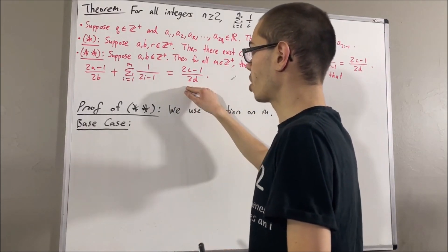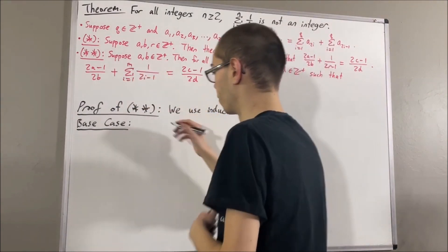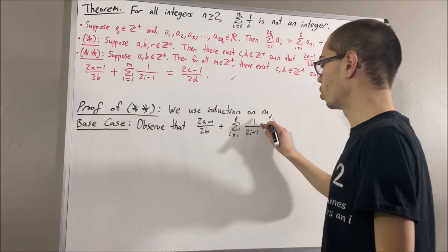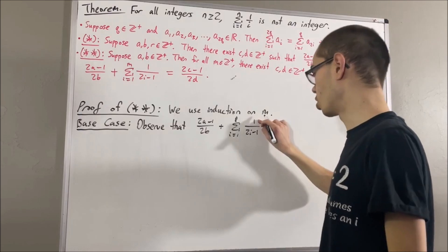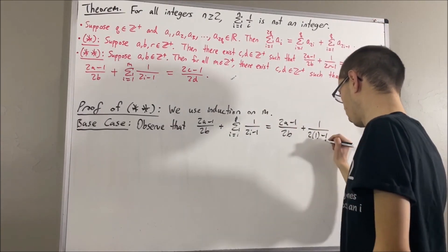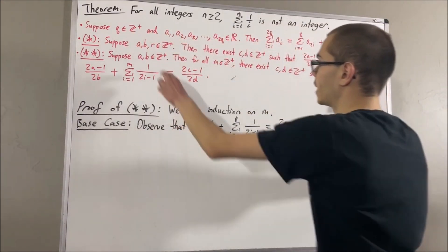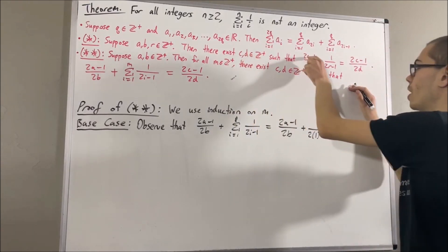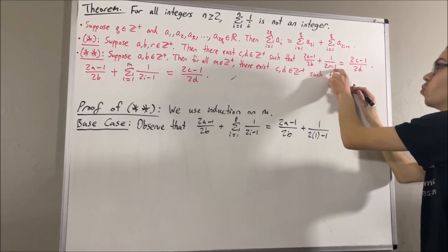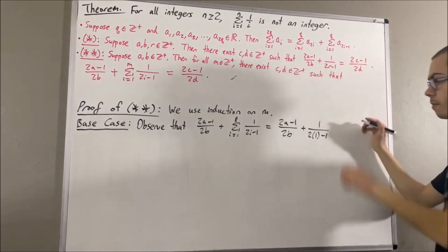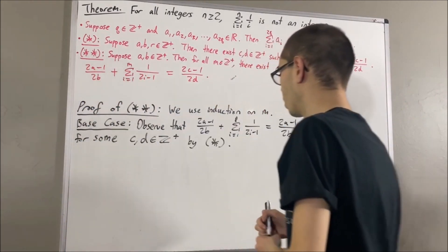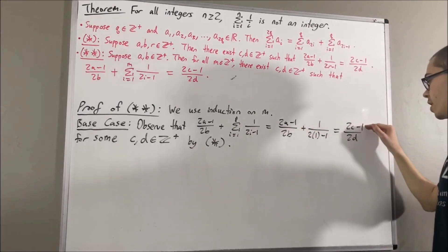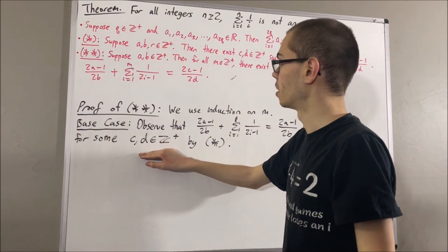We're trying to show that there exist positive integers c and d such that (2a − 1)/2^b plus the sum from i equals 1 to 1 of 1/(2^i − 1) equals (2c − 1)/2^d. In this sum, we replace i with 1, so the sum is just 1/(2·1 − 1). But then, according to ★, taking a to be a, b to be b, and r to be 1, there exist positive integers c and d such that (2a − 1)/2^b + 1/(2·1 − 1) equals (2c − 1)/2^d. So this completes the base case.